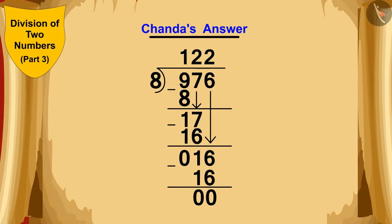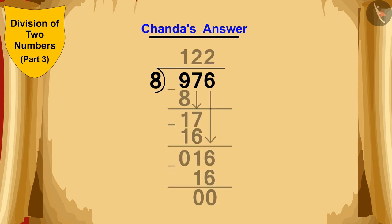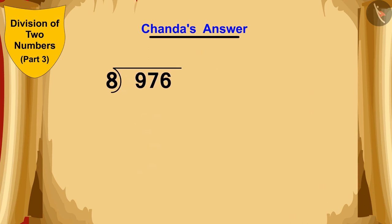Now, let us see how Chanda did this division. Chanda saw that she could divide 9 by 8. 8 times 1 is 8. So she wrote 1 above and subtracted 8 from the 9 and wrote 1 below. Now, Chanda wrote the next number 7 next to the 1 below.